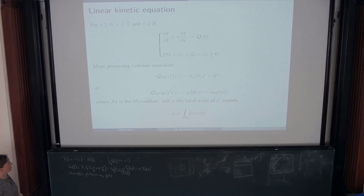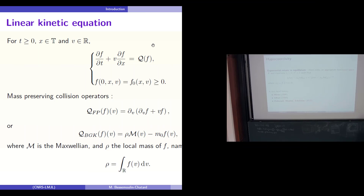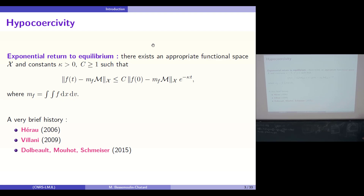Since the idea is to adapt the techniques of proofs from the continuous setting to the discrete setting, I will first recall some facts about the continuous analysis. Hypocoercivity means that there is an exponential return to equilibrium as time tends to infinity. For an appropriate norm, one can prove that the distribution function f tends to the equilibrium, where m_f is the mass of f.